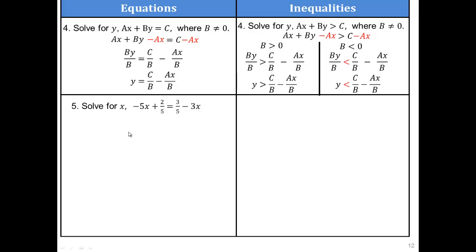All right, now what here? We're trying to isolate the x. Add 3x to both sides. Negative 5x plus 3x would be negative 2x plus 2 fifths equals 3 fifths. Get rid of that 2 fifths. OK, now what? So you have negative 2x equals 1 fifth.